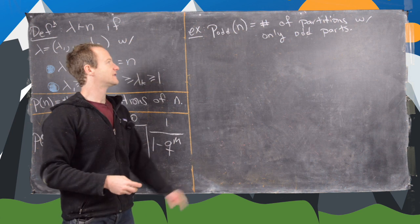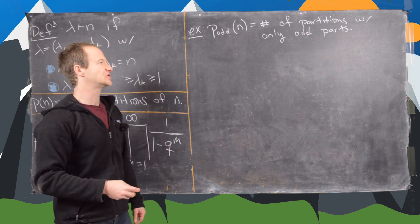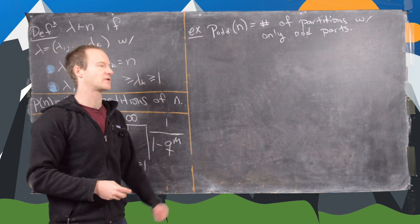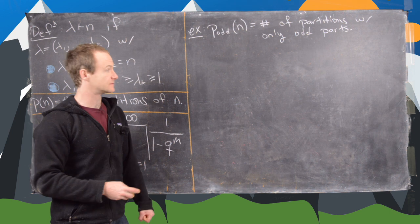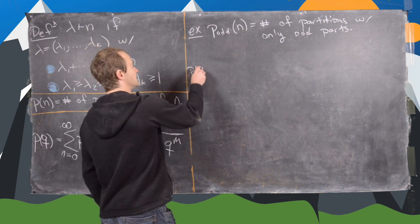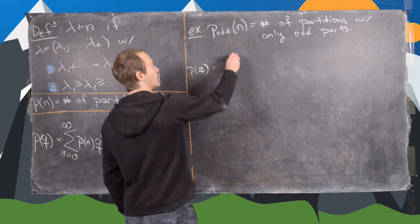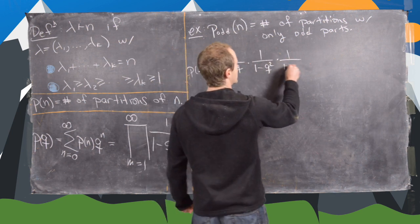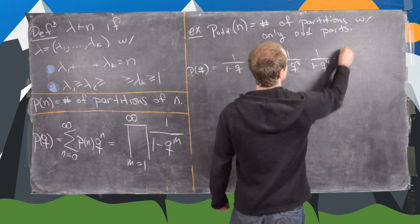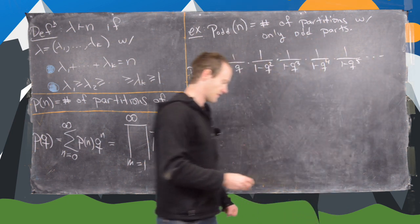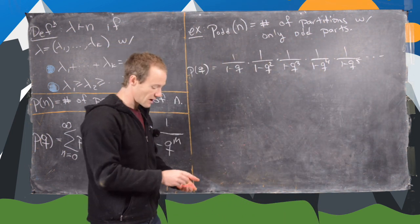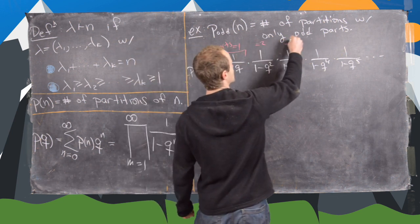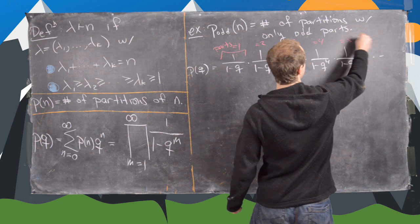The first example is P_odd(n), the number of partitions of n with only odd parts. We calculated small values in a previous video, but here we want a generating function. Recall that the unrestricted generating function for partitions is 1/(1-q) × 1/(1-q²) × 1/(1-q³) × 1/(1-q⁴) × 1/(1-q⁵) × ..., where each factor corresponds to parts equal to 1, 2, 3, 4, 5, and so on.